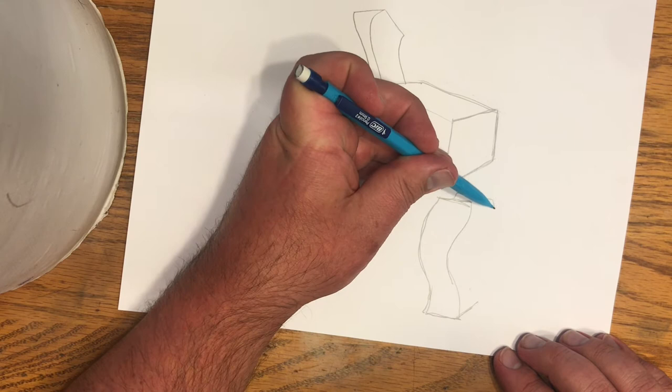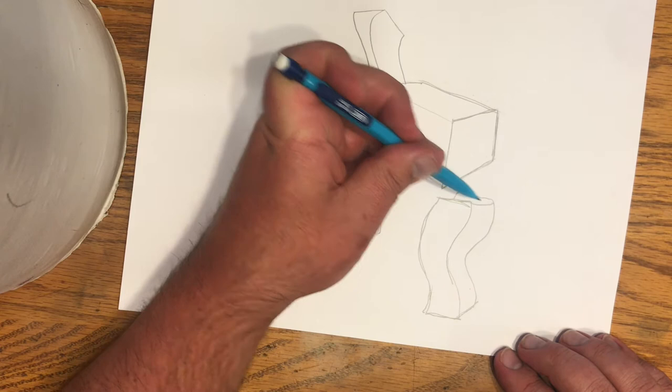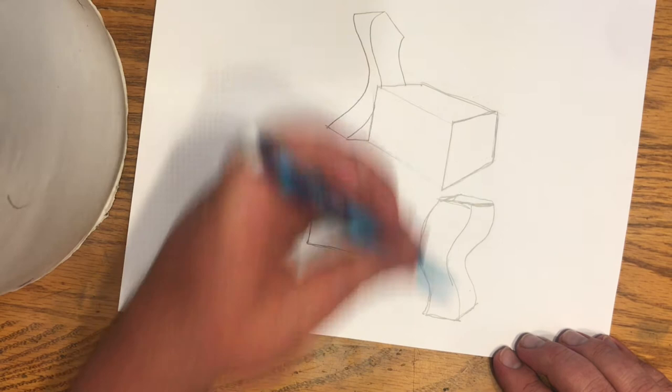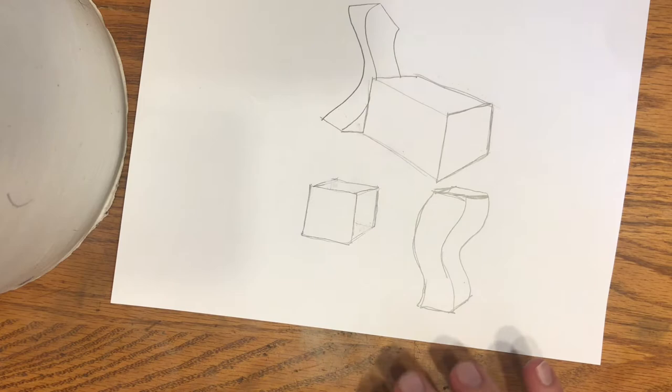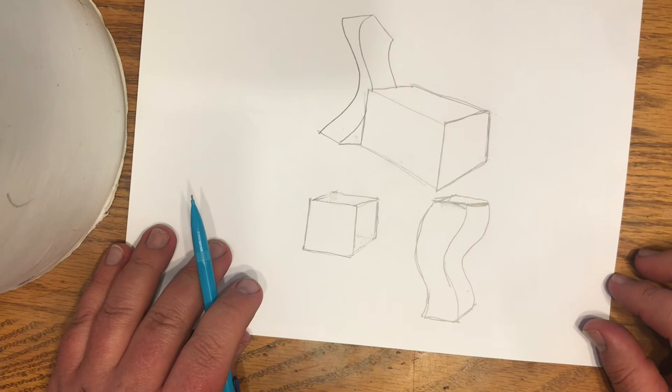So it goes out, back in, out, and then I'm going to connect my lines. So that's how I draw a warped cube or a rectangular prism.